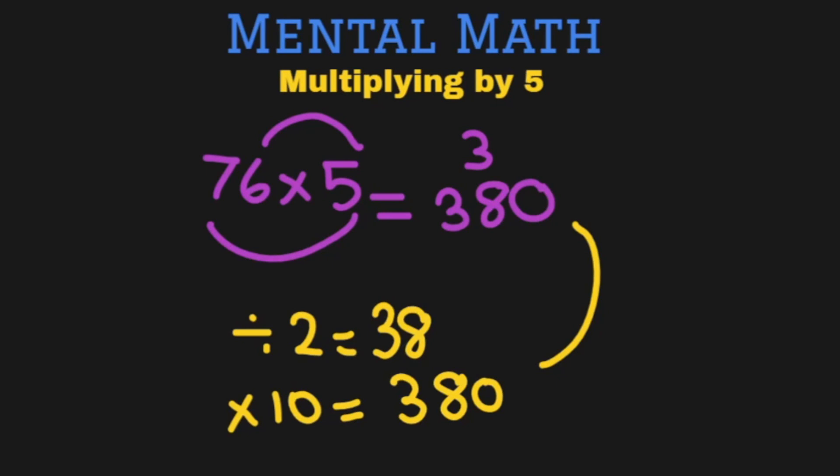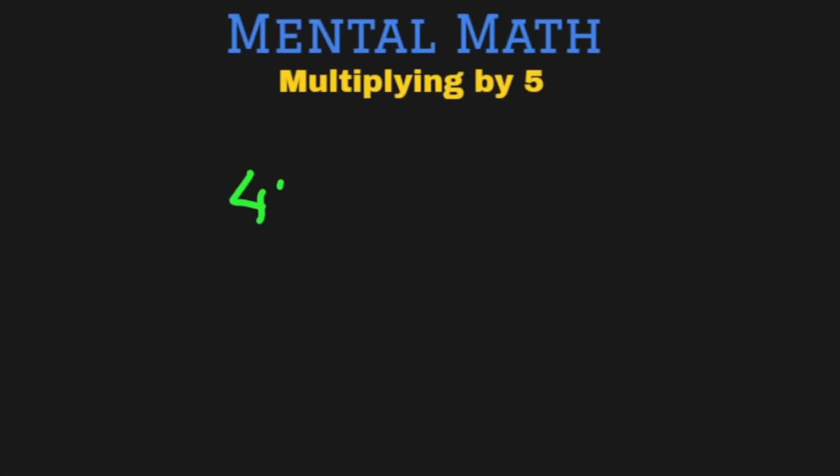And this trick works with even bigger numbers. So let's tackle a bigger number now. 426 multiply by 5. What is the answer? If I do it the traditional way it will definitely take me longer. But let's not go into it anymore. Just do it using our trick.